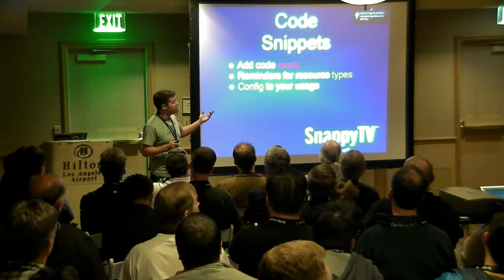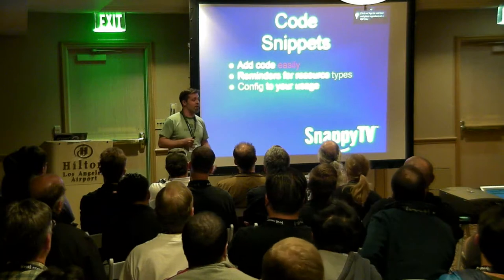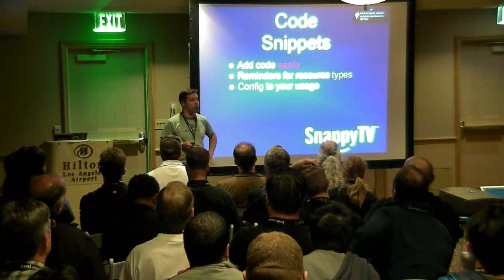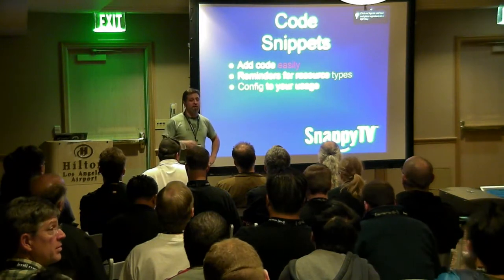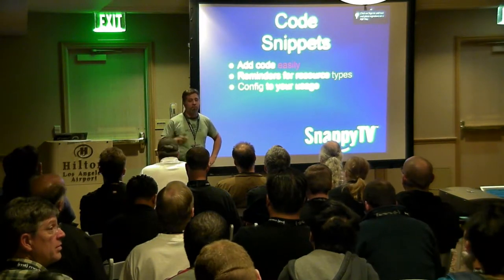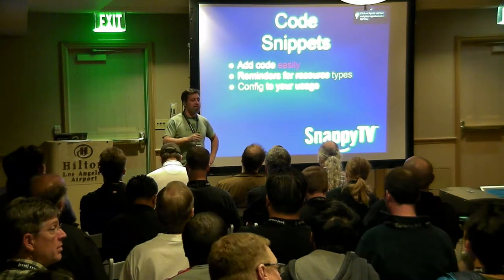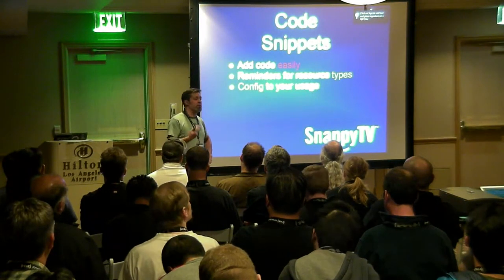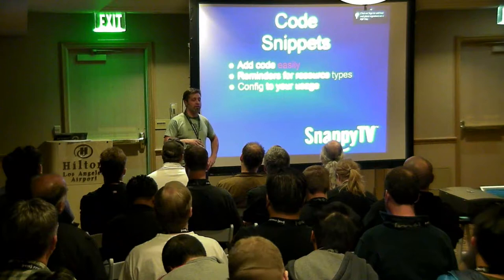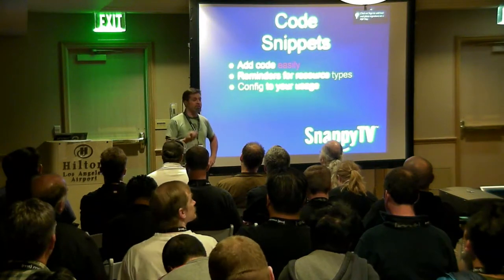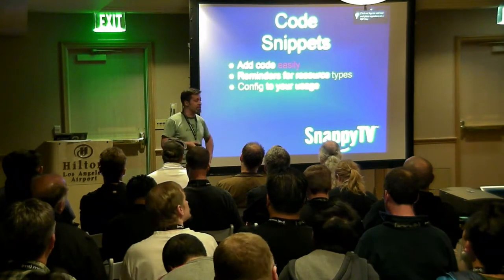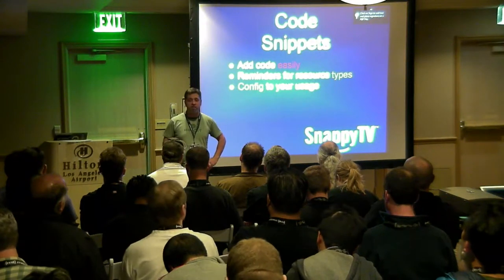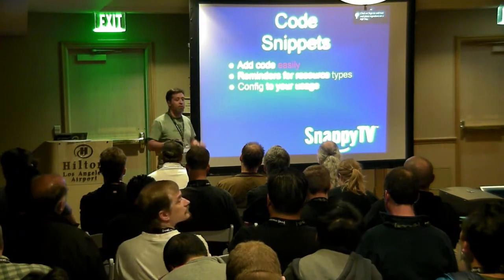Code snippets — actually stolen from TextMate. The ability to type 'file', curly bracket, hit tab, and it completes the rest of the stanza for you. It's actually very slick. You don't have to remember how we normally do it or what order we put stuff in. It makes your code very consistent. You don't have to constantly refer back to code you've already written.